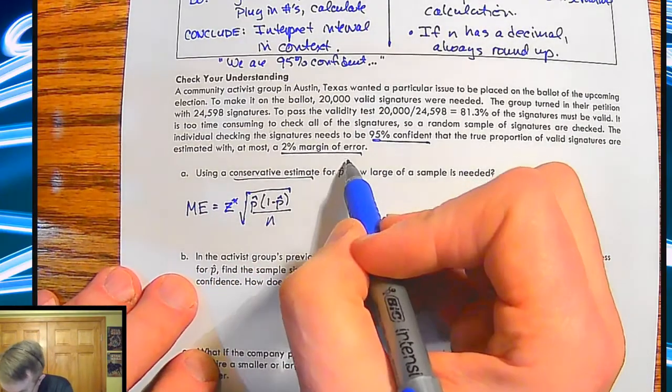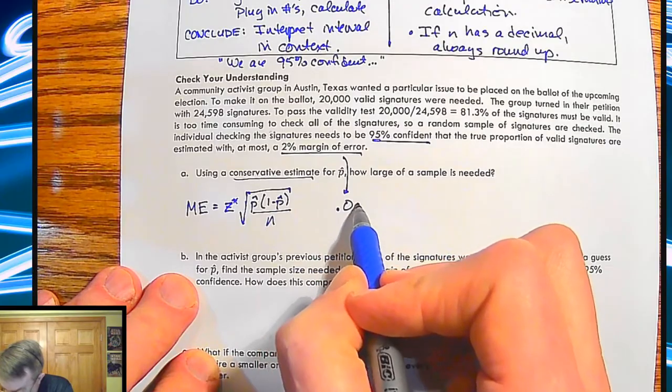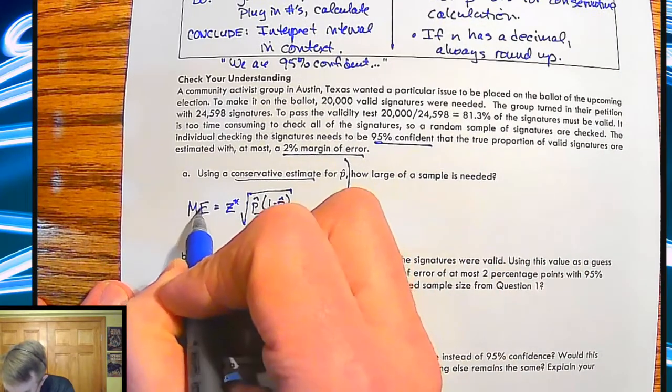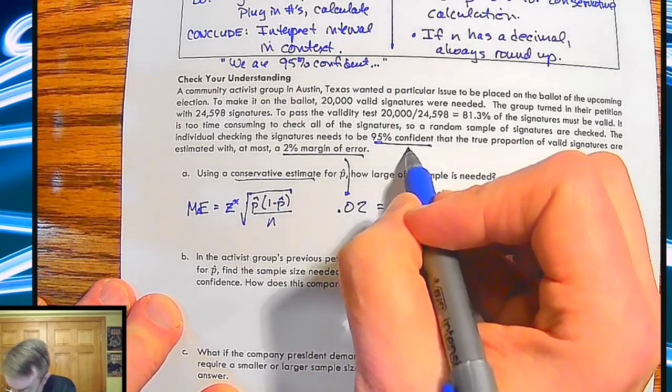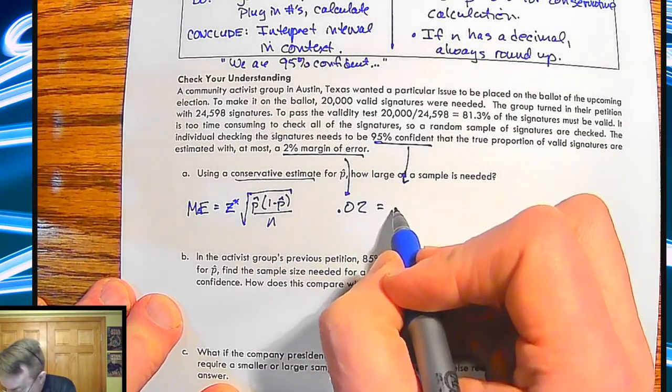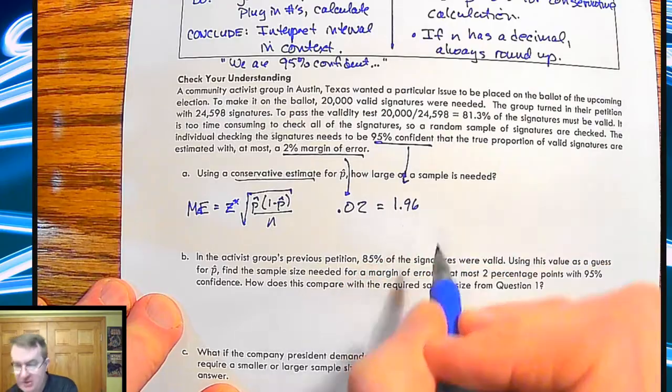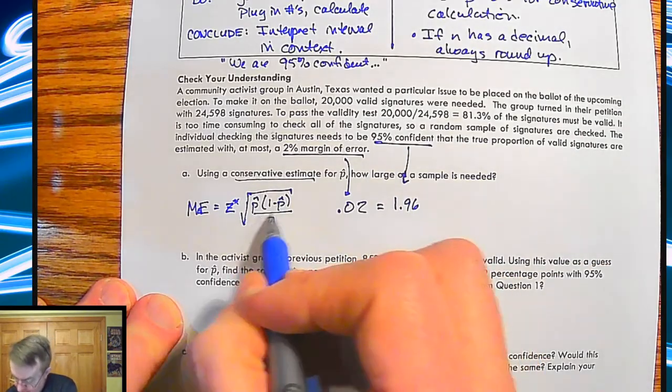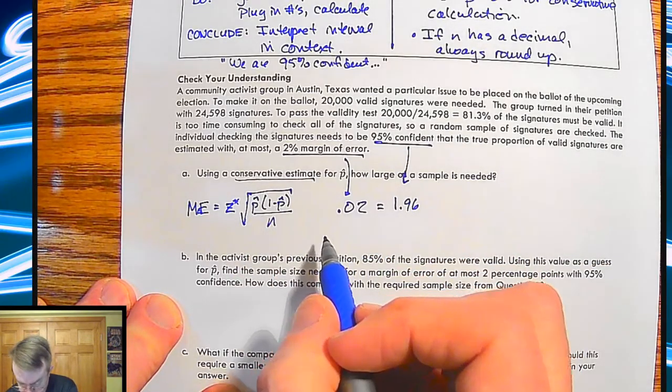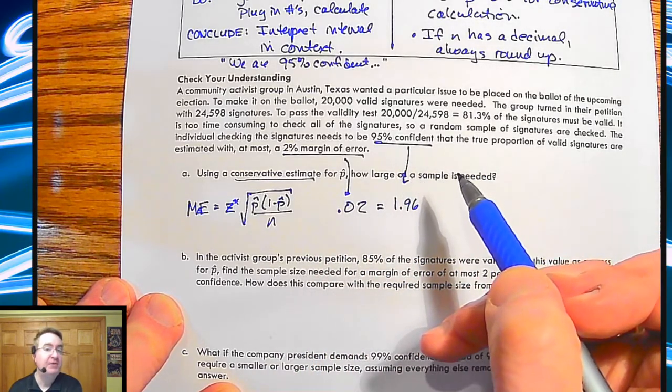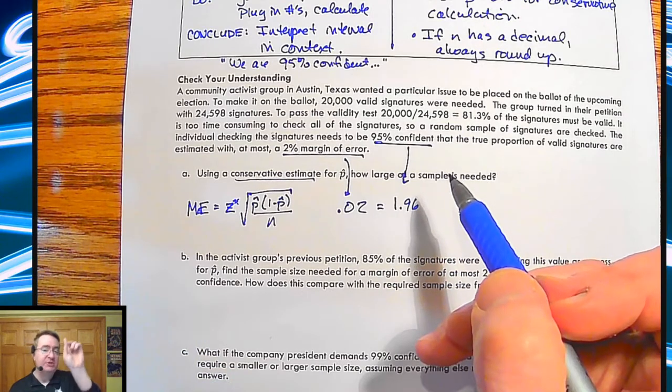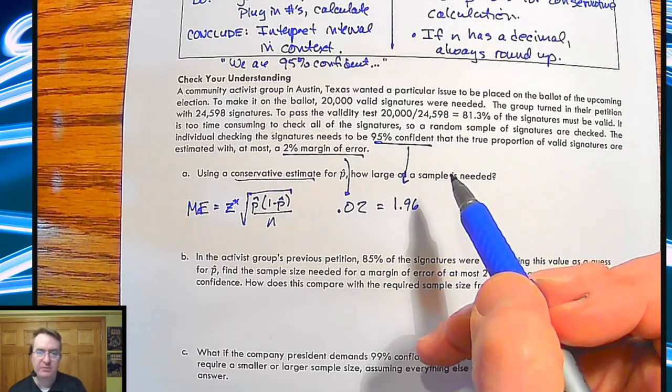So what you're going to end up doing is you're going to take a random sample of signatures and the individual checking those signatures needs to be 95% confident that that true proportion of the valid signatures estimated within a 2% margin of error. So a couple of things. So we care about 95% confident and we have a 2% margin of error. And we're saying we want a conservative estimate. So this is going to become my margin of error. Actually, I usually write it as MOE. Equals 95% confident. That gives me a number of 1.96. That's my Z star score. And then my proportion, which is coming from, wait, it's way up. Wait, we don't even care because we're going to go 50, 50. We want to make sure that we're going to check so many signatures that we're fine.